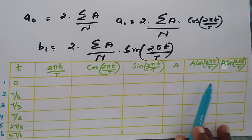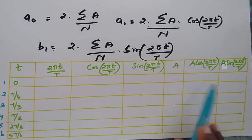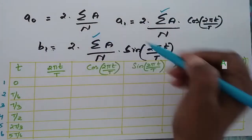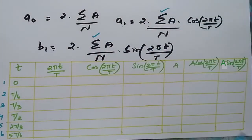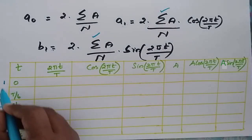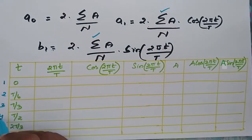That is the t value for summation and substitution. The number of data points is 6, corresponding to t values: 0, 1, 2, 3, 4, 5, 6.